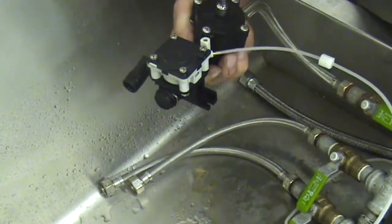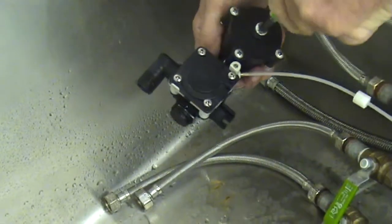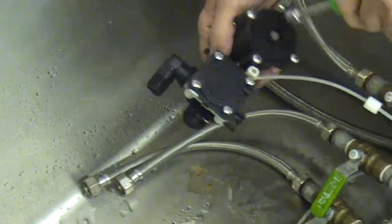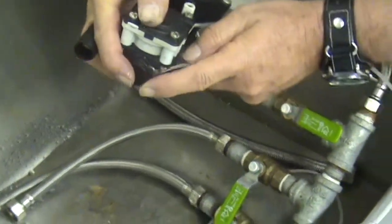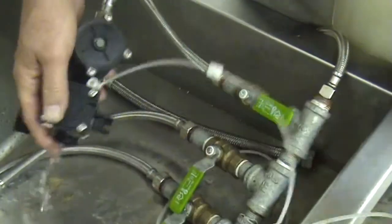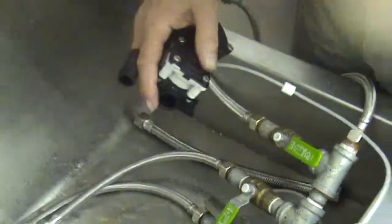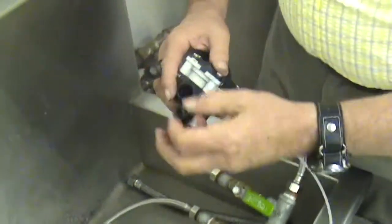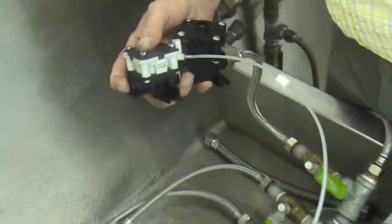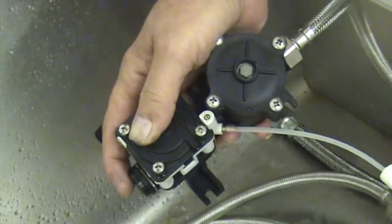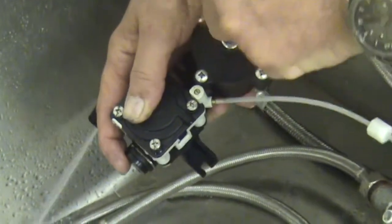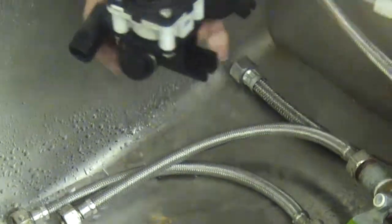Now, I would say that o-ring probably has some kind of defect in it that's keeping it from sealing. So it's best to replace that with another one. I'm just going to find another plug with an o-ring on it. See if we can't correct it that way. There we have it. It seems to be sealed this time.